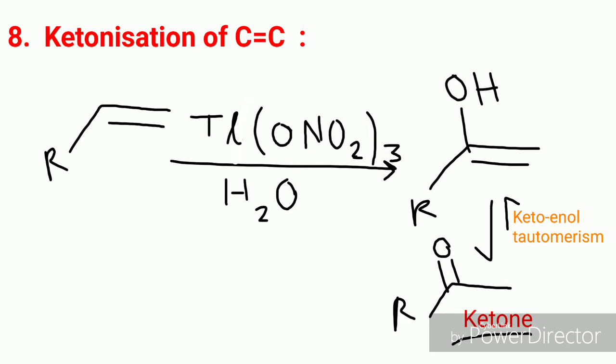Now we will learn about ketonization of alkene. Any unsymmetrical alkene gives first an alcohol attached to the more crowded carbon of the double bond, by treatment with thallium(III) nitrate — Tl(NO₃)₃ — and H₂O, and after keto-enol tautomerism it is converted to the corresponding ketone.